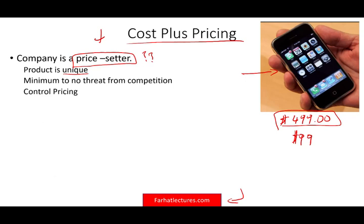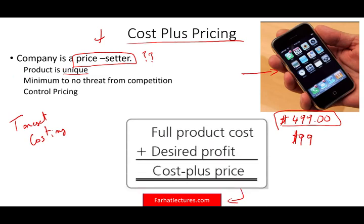This is in contrast to target costing. Under target costing, you have no control over your price because the price is set by the market — you're selling something that is not unique. Here, under cost plus pricing, you are selling something that is unique.